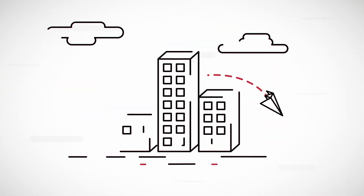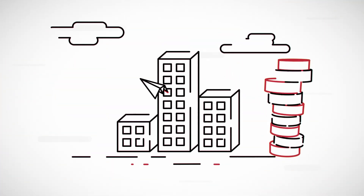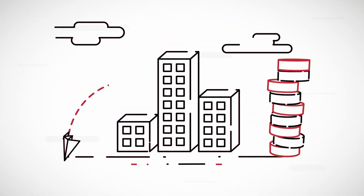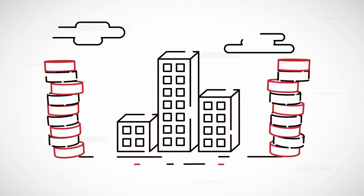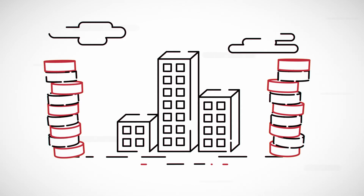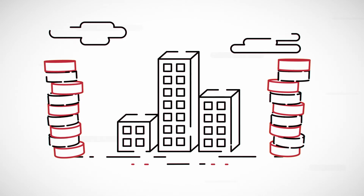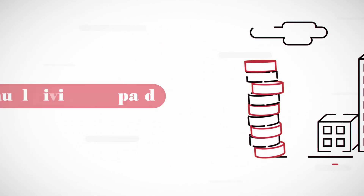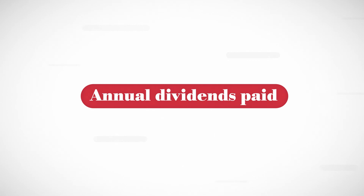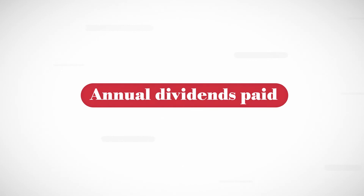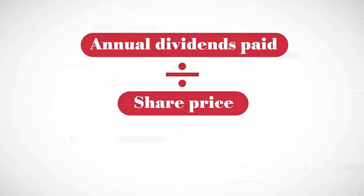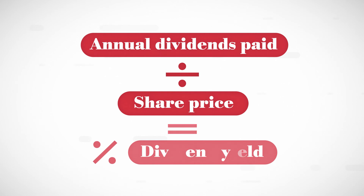The dividend yield can help to give you an indication of the level of income you might get from an investment company share. It's calculated by dividing the most recent annual dividends paid by the current share price and expressing this as a percentage.